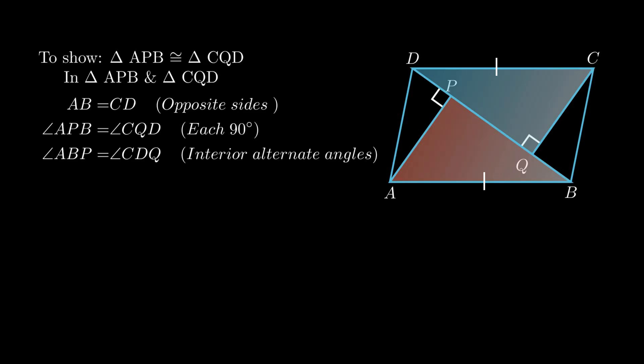Angle ABP equals angle CDQ as interior alternate angles are equal. Therefore by angle-angle-side rule, triangle APB is congruent to triangle CQD.